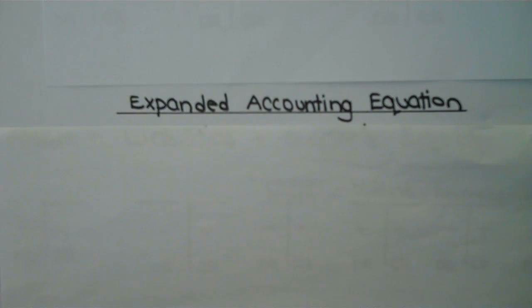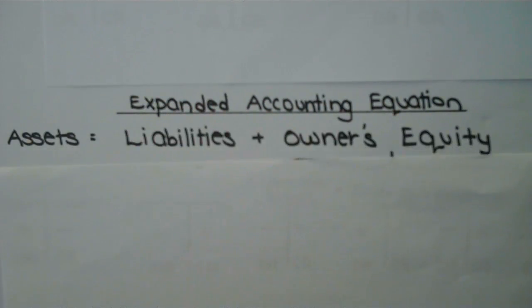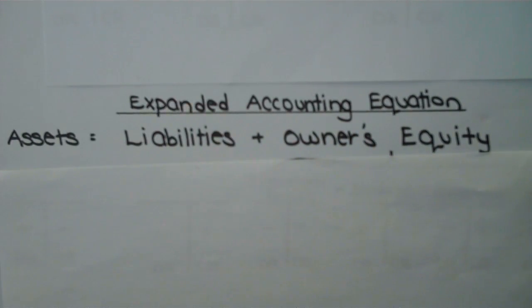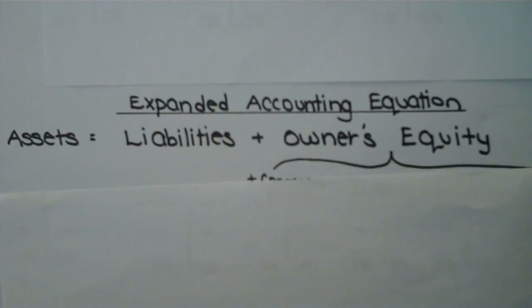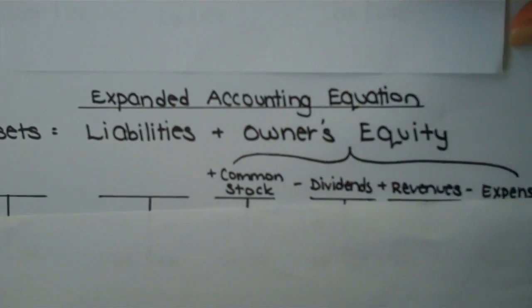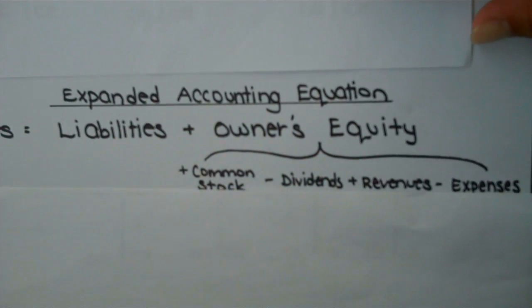Now we're going to apply t-accounts to our expanded accounting equation. We remember the basic accounting equation was assets equal liabilities plus owner's equity. The expanded form of the equation is to identify the four subcategories of owner's equity. The four subcategories are common stock, dividends, revenue, and expenses.